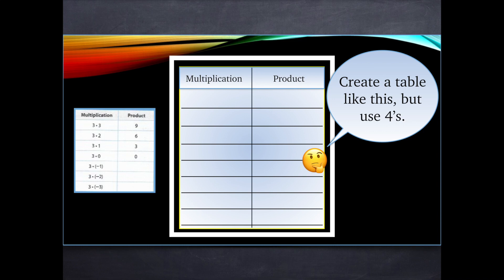So I want you to do 4 times 3, 4 times 2, 4 times 1, 4 times 0, 4 times negative 1, 4 times negative 2, and 4 times negative 3. Exactly like that example on the left, but the first number would be 4 for all of them.